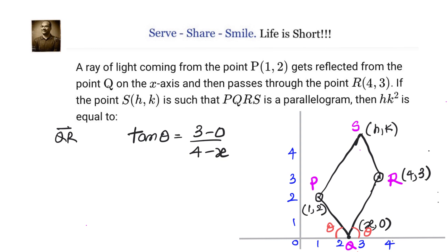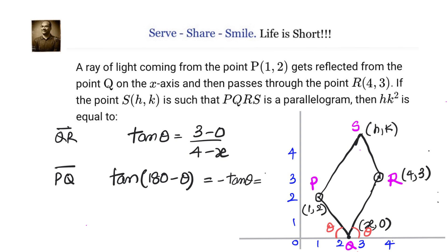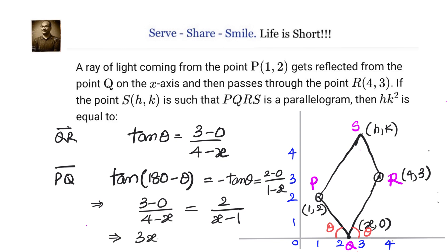The slope of PQ is tan(180° − θ), which equals −tan θ, giving us (2 − 0)/(1 − x). The angle is 180° − θ because inclination is measured as the angle between the line and the positive x-axis in the anti-clockwise direction. So for QR the inclination is θ, and for PQ it is 180° − θ. Equating: 3/(4 − x) = 2/(x − 1).